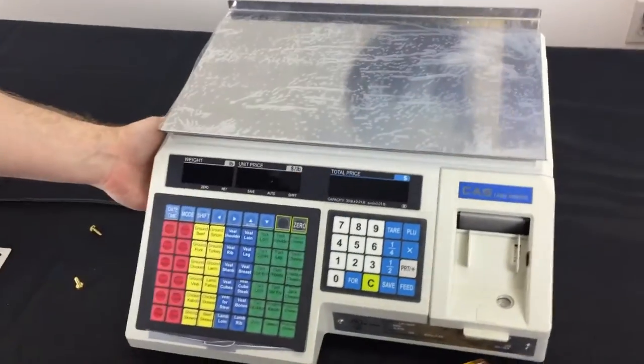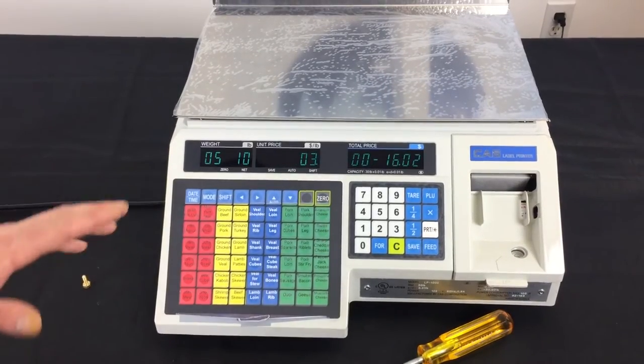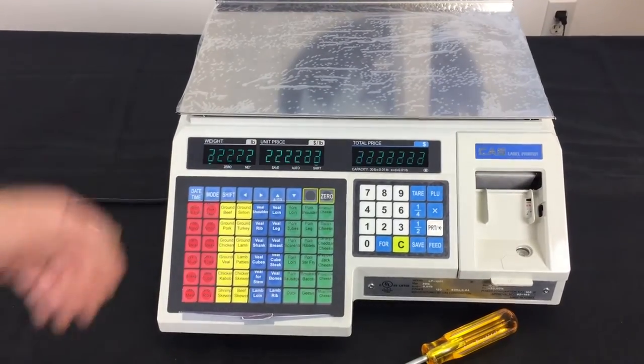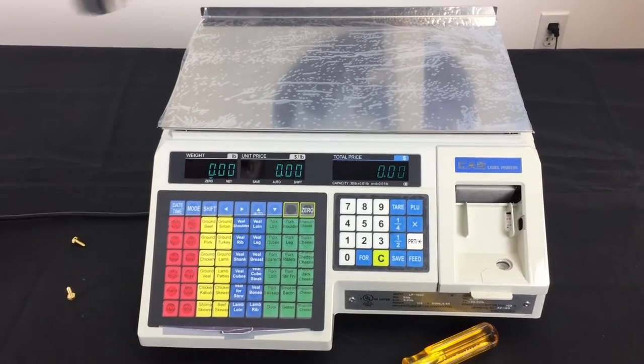We're gonna place the platter back on the scale to test our weight. We're gonna power it up, wait for it to count up, and go into the weight mode. Going through our count now. Once we get into the regular weight mode, we want to test our weight.